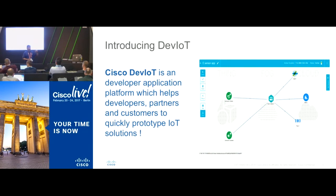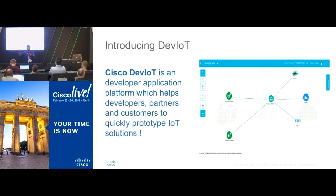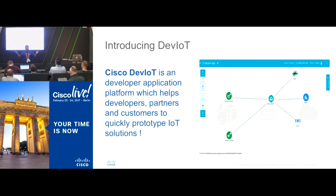In practical terms, it could be an earthquake sensor. Based on a trigger, you want to take some action — send a text message to all the people on the floor, send a Spark message to all your employees, and have a siren go off. These are the kinds of things that start tying into IoT. DevIoT is all about helping you as a developer build this application with ease.